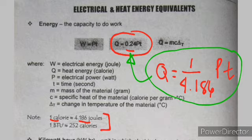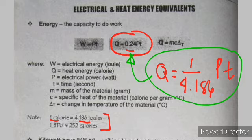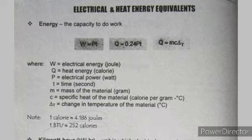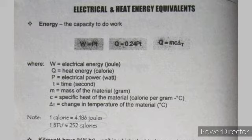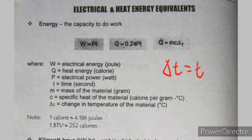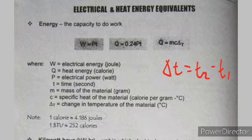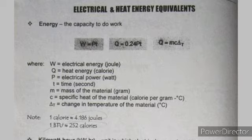One calorie equals 4.186 joules; one BTU (British Thermal Unit) equals 252 calories — these are constants derived by scientists. Also, Q equals mcΔT — the formula for heat energy. Delta T is the change in temperature: T2 minus T1 (final minus initial temperature). We discussed this in a previous video.